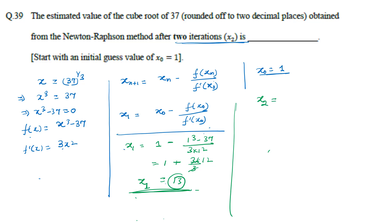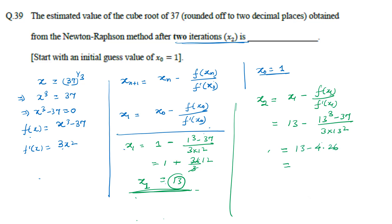Second iteration: x₂ = x₁ − f(x₁)/f'(x₁) = 13 − (13³ − 37)/(3×13²). Computing with a calculator: 13 − 4.26 ≈ 8.74. So x₂ = 8.74. Hope this helps you with your preparation, thank you all.